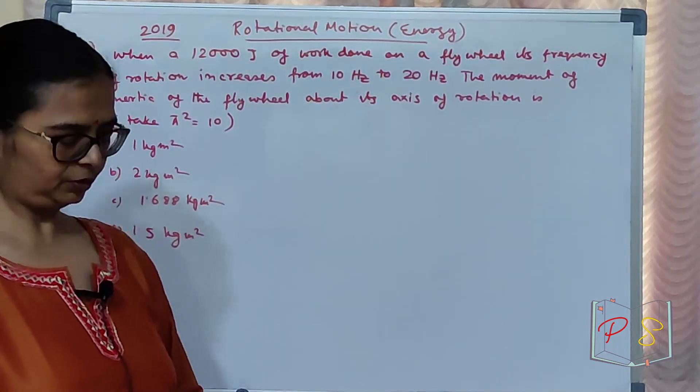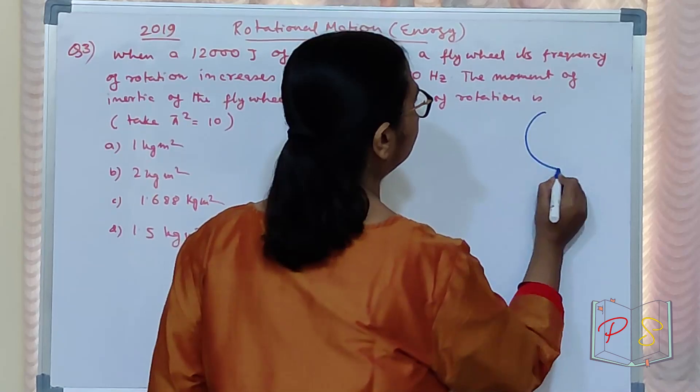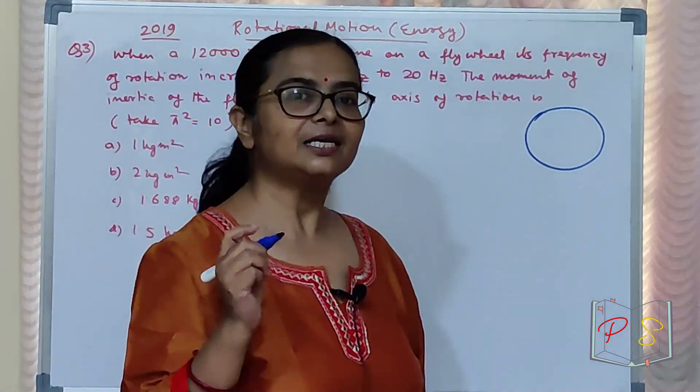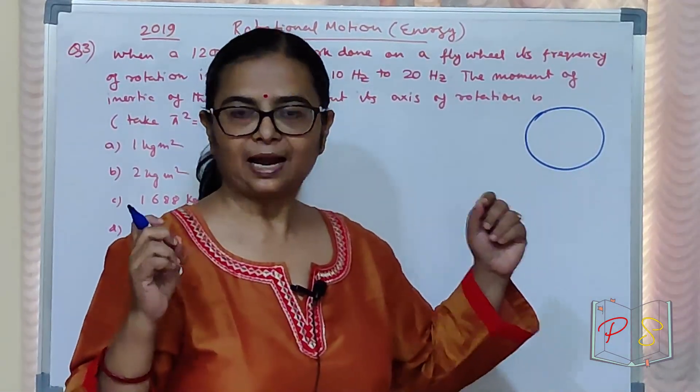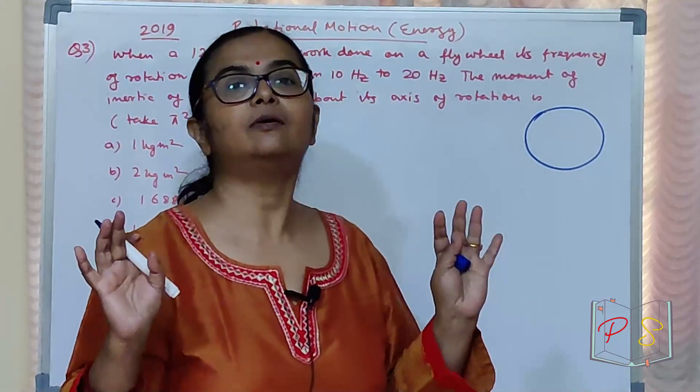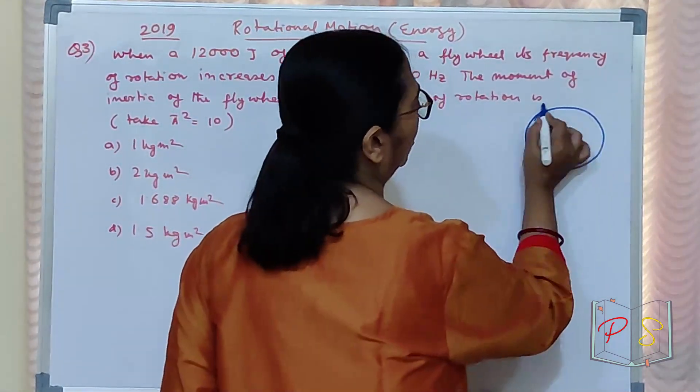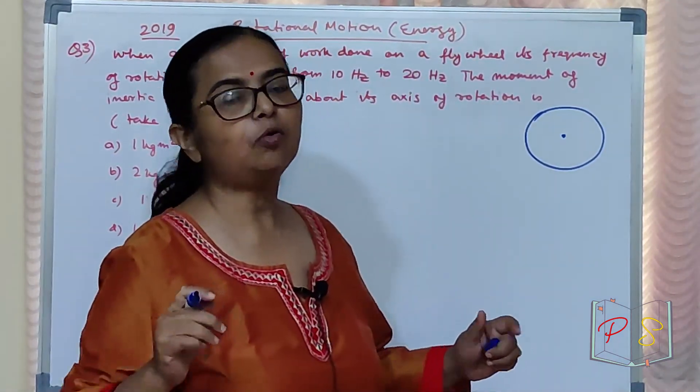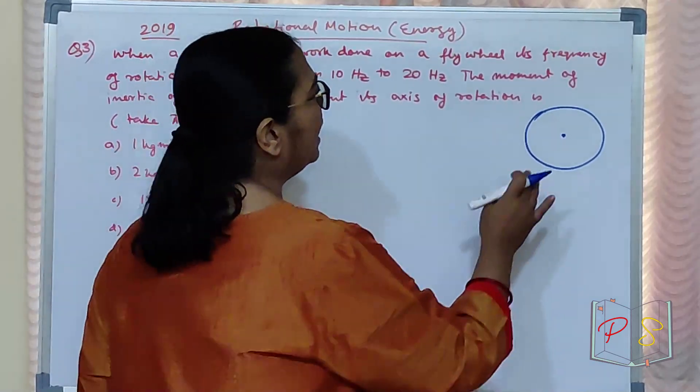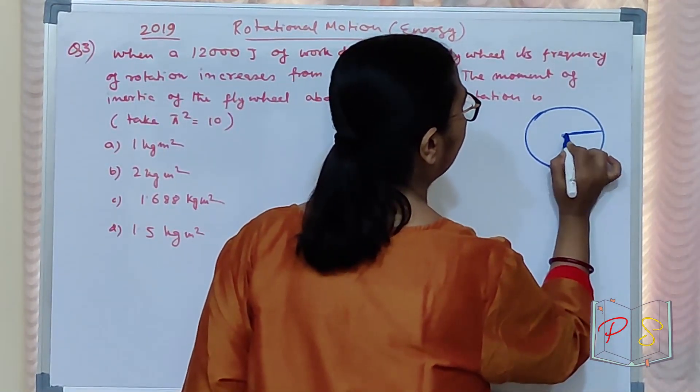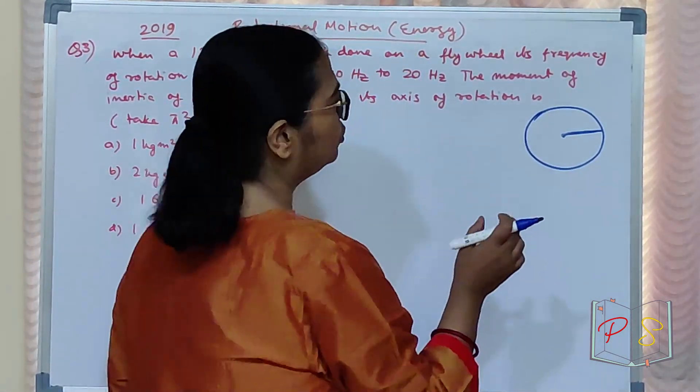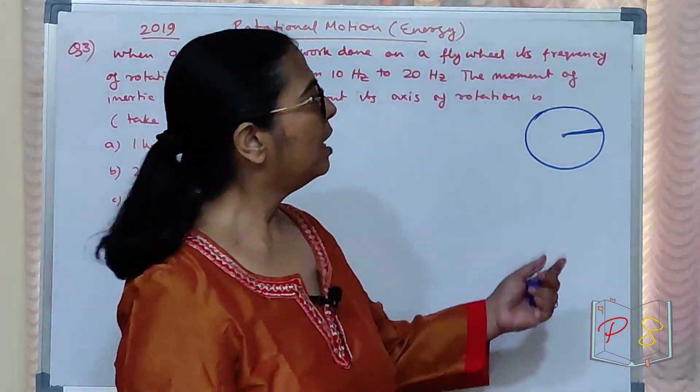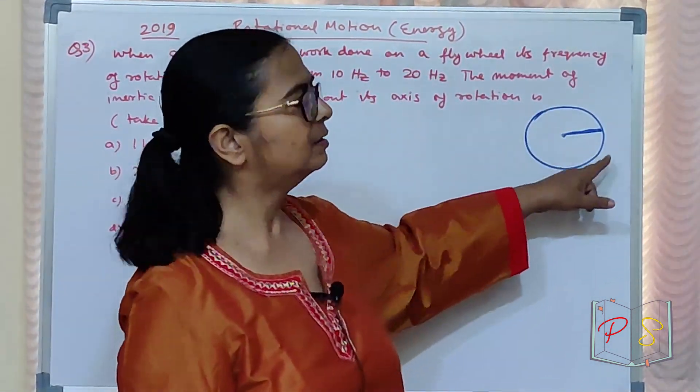First of all, flywheel kisko pate hai? Flywheel, it is basically a wheel. This wheel ka khas bat aisa hai ki most of the mass, at least more than 90% of the mass, is on the rim, on the wheel. Meaning by, iska jo moment of inertia hota hai, woh bohut zyada hota hai. Iska khali hota hai, ek chai, ek rod se inert, shayad you know, to keep it at the right position, one rod hota hai or two rod hota hai.